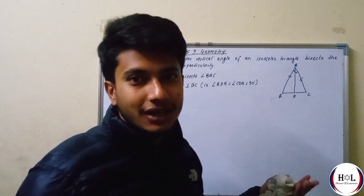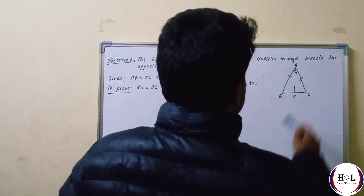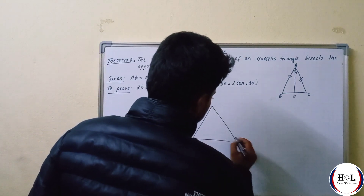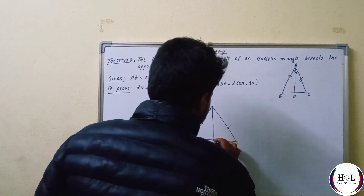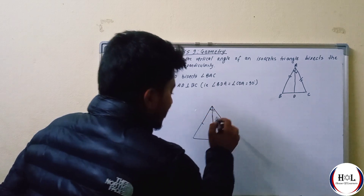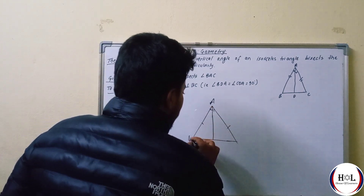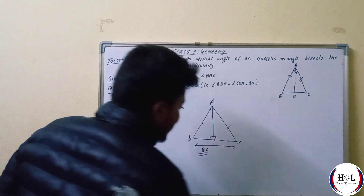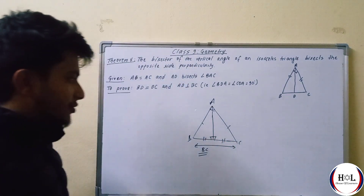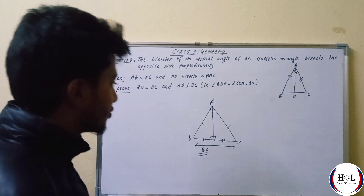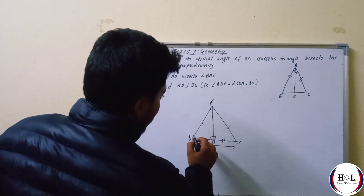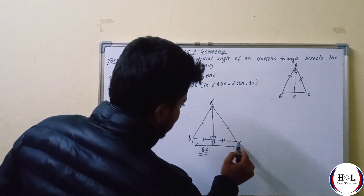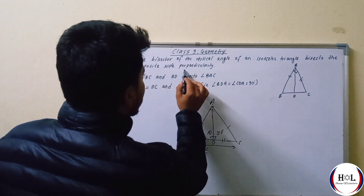This is the bisector of the vertical angle. The bisector is opposite side perpendicular. If we put the bisector on the vertical angle of an isosceles triangle, this bisector of the vertical angle of an isosceles triangle is opposite and perpendicular. The angle ADB is 90 degrees — it's perpendicular, so it's 90 degrees.